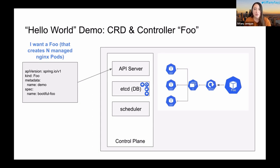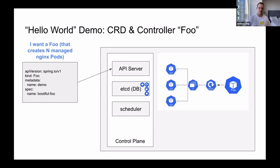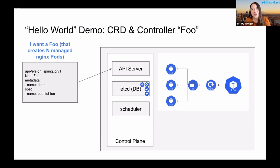We have our custom resource of kind foo. This gets added to the database, and if there's no controller, that's where things end. We've created foo so that it creates a deployment using the deployment controller, which then gets added to the database. The deployment controller queries the API server, sees the new deployment request, and continues down through creating the replica set and the pods. The scheduler is another type of controller that assigns nodes to pods — it's just controllers all the way down.